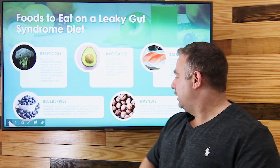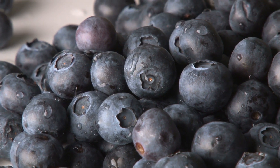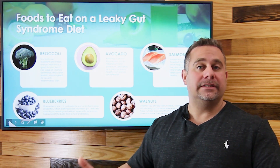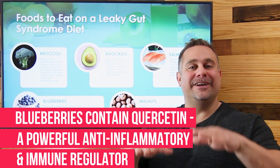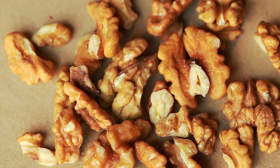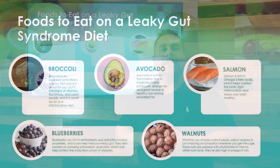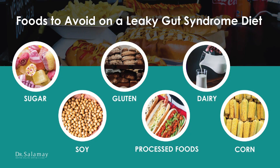We also have blueberries and walnuts. Blueberries have flavonoids, antioxidants, and quercetin, which is a very powerful anti-inflammatory and immune regulator. Walnuts have lots of phytonutrients and also contain omega-3s, which are anti-inflammatory. All these things can really help with a leaky gut diet, promoting an environment that is not inflamed. We've covered foods that are good for a leaky gut diet and the foods to avoid.